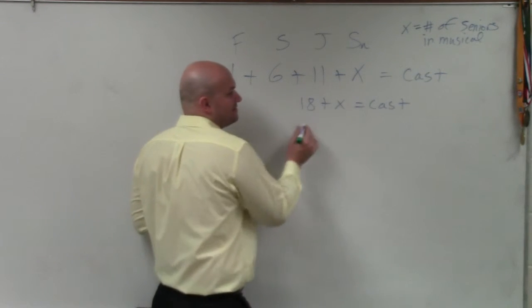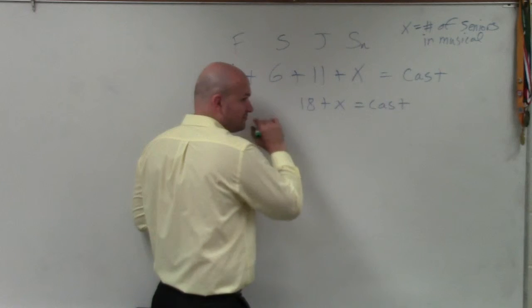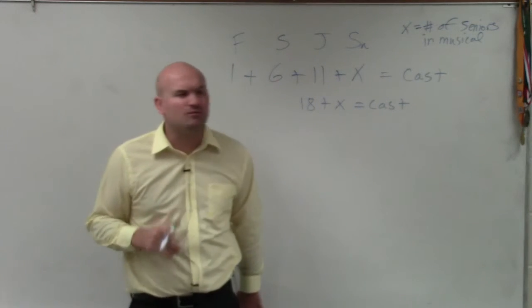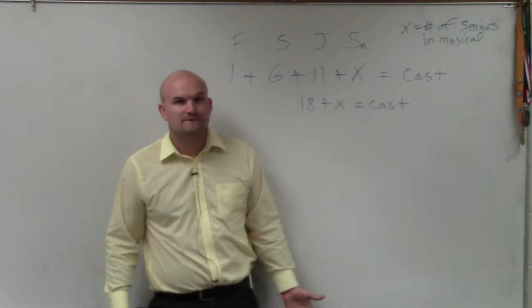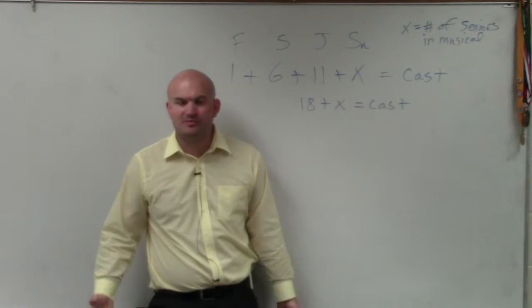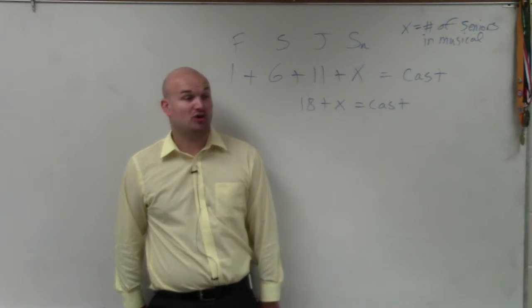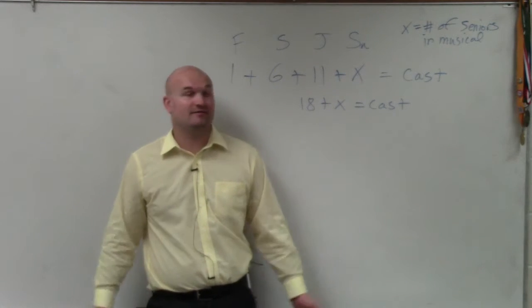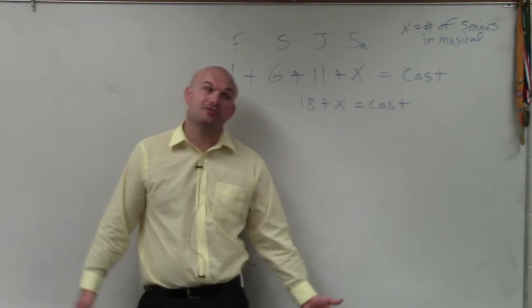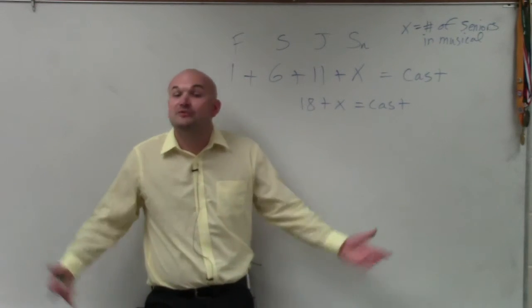So do you guys understand that if I was going to look at the cast, one-third of that would be, how could I represent one-third? What operation could you do to represent one-third? Do you multiply by 3 to get one-third? If I have a cup of flour and I say I want one-third of that, do you multiply by 3? You divide by 3.